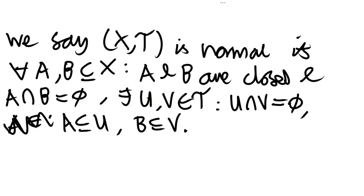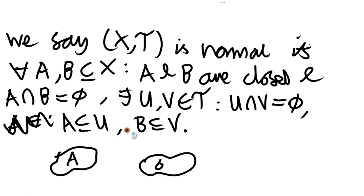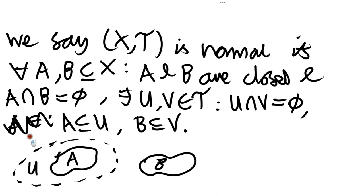To say it again: a topological space is normal when, given any pair of disjoint closed sets, one can find a pair of disjoint open sets — one of which is a superset of one closed set, and the other is a superset of the other closed set. Diagrammatically: suppose we have a closed set A and a closed set B which are disjoint. We can find an open set U containing A and an open set V containing B, and these don't intersect with each other.